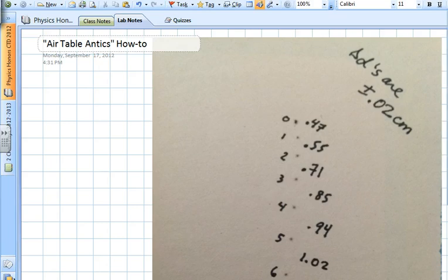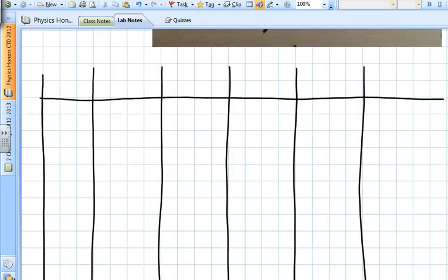So for example, that first number, 0.47, is what I measured for the interval from the first dot to the second dot. So in the amount of time it took the air puck to go from 0.0 to 0.1, it traveled 0.47 centimeters. We're going to make a table of the interval distance in centimeters. This is measured plus or minus 0.02 centimeters, but yours depends on how good your eyes are.